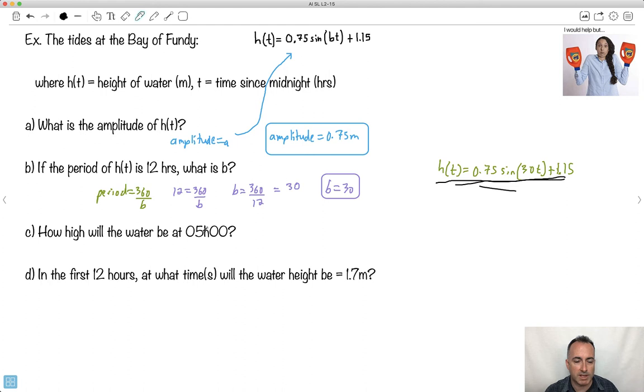So how high will the water be at 5 o'clock in the morning? Well, it helps to think about how we deal with it. Remember, t is time since midnight, so since midnight, t is actually just 5. So I have to find h(5). The height when the time is 5 is 0.75 times the sine of 30 times 5, all that plus 1.15.